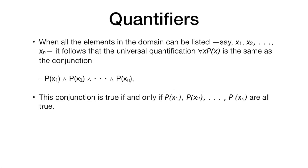When all the elements in a domain can be listed — say x1, x2, ..., xn — the universal quantification 'for all x, P(x)' is equivalent to the conjunction P(x1) and P(x2) and so on. This conjunction is true if and only if P(x1), P(x2), and all the rest are true. Sometimes this can be very useful, as you will see in the next example.